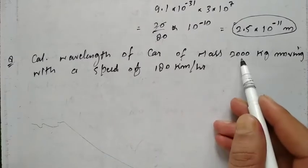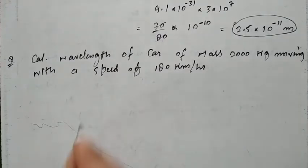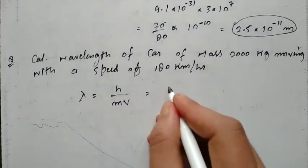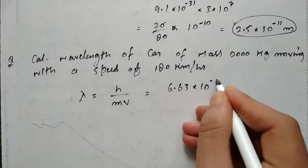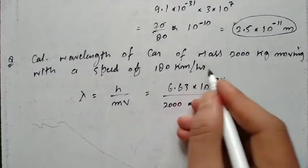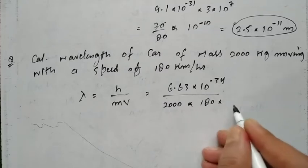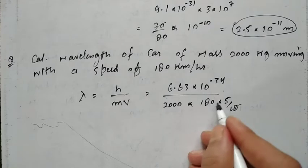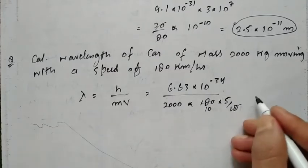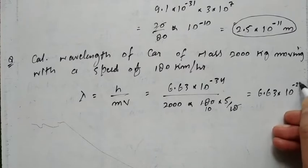Second question: Calculate the wavelength of a car of mass 2000 kg moving with a speed of 180 km/h. Using λ = h/mv: h = 6.63×10⁻³⁴, mass = 2000 kg. Converting 180 km/h to m/s: 180 × 5/18 = 50 m/s. Denominator = 2000 × 50 = 10⁵. So λ = 6.63×10⁻³⁴ / 10⁵ = 6.63×10⁻³⁹ m.